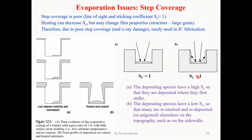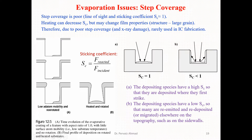In case B, where the sticking coefficient is smaller than one, the depositing species have a low sticking coefficient. As a result, many species are re-emitted and re-deposited — they migrate from the surface elsewhere on the topography, such as onto the sidewalls or the walls of the crucible.